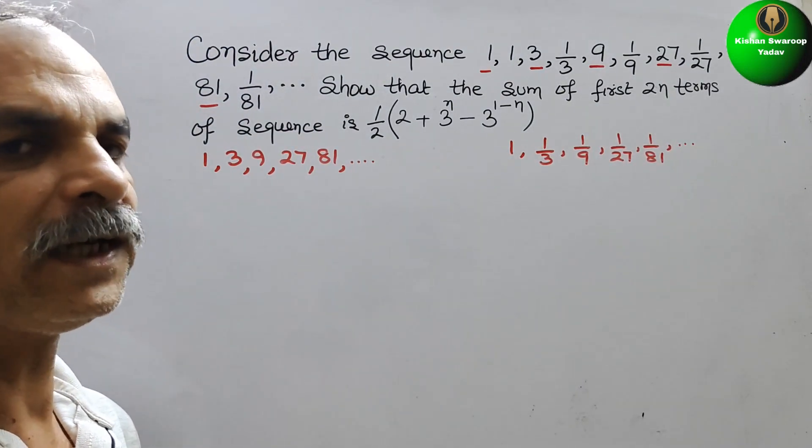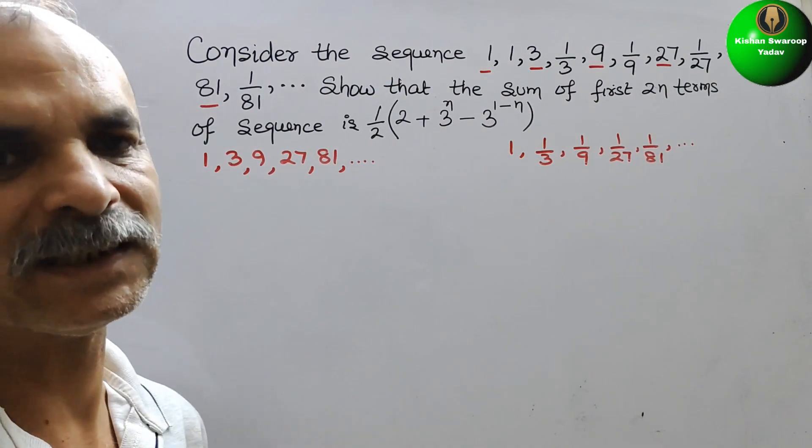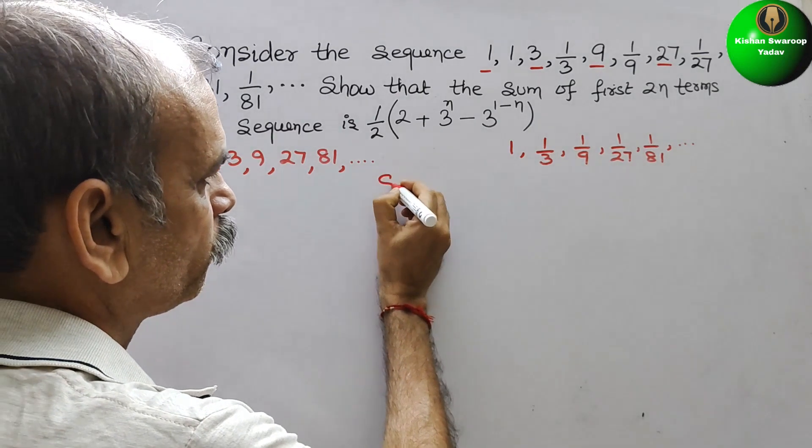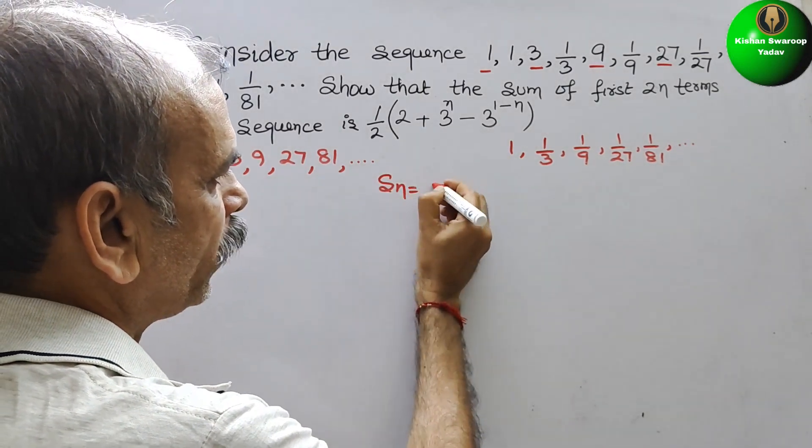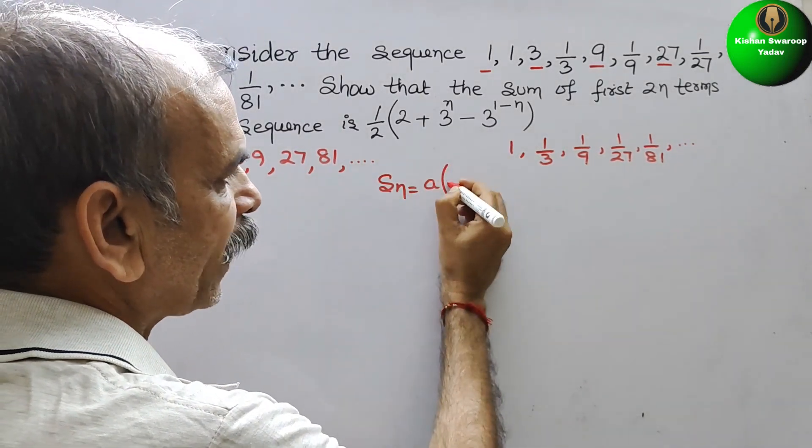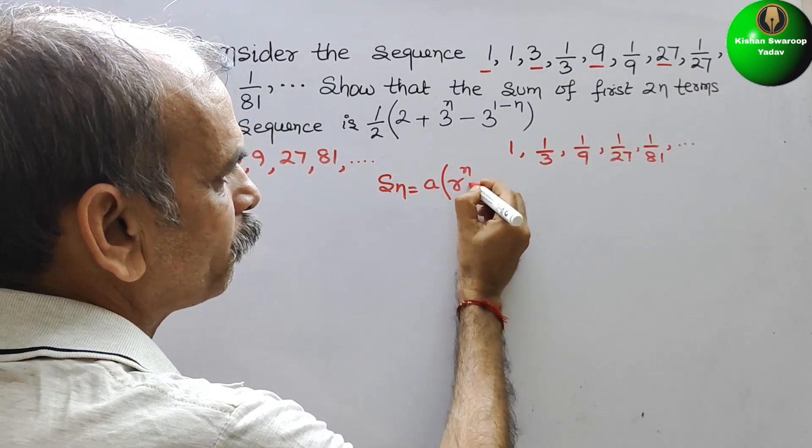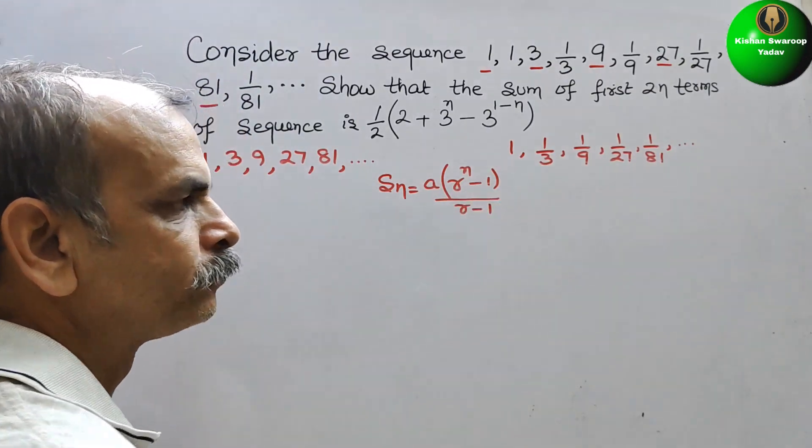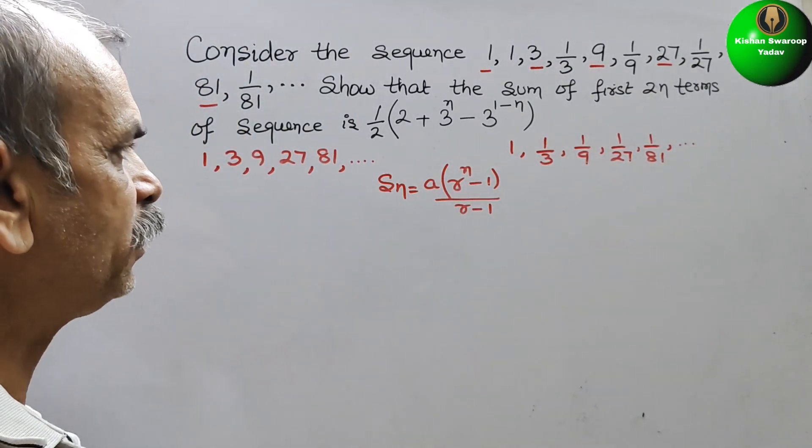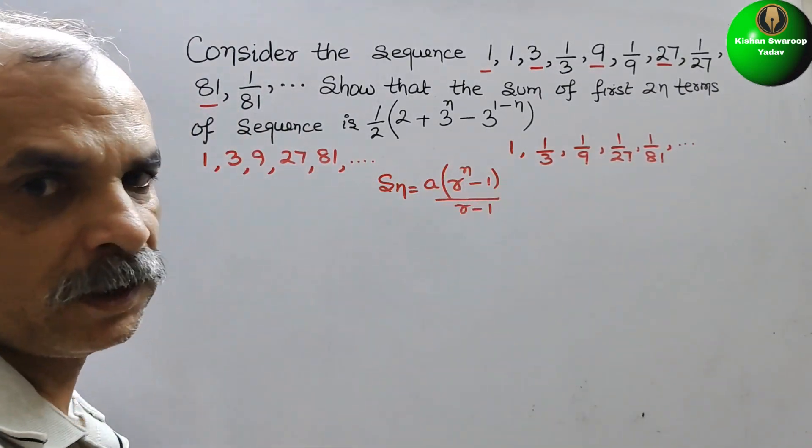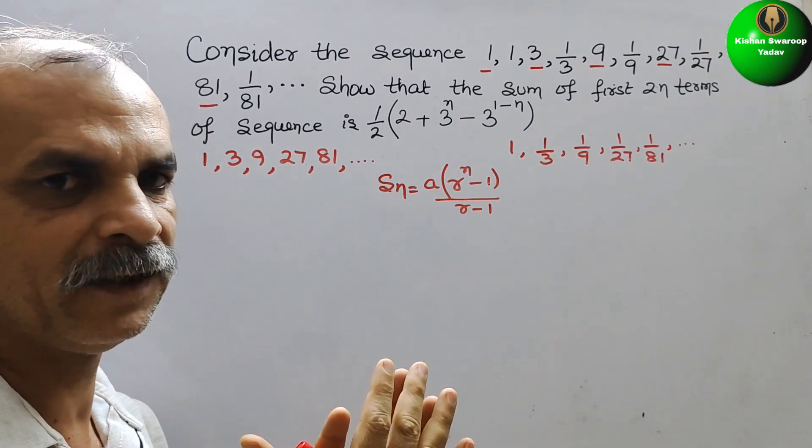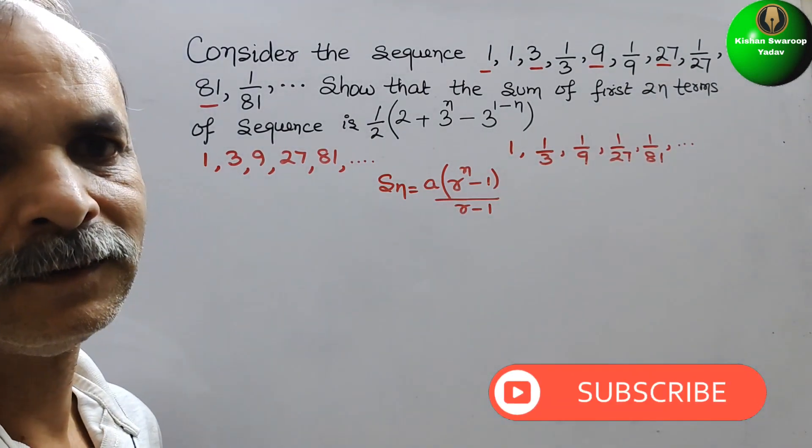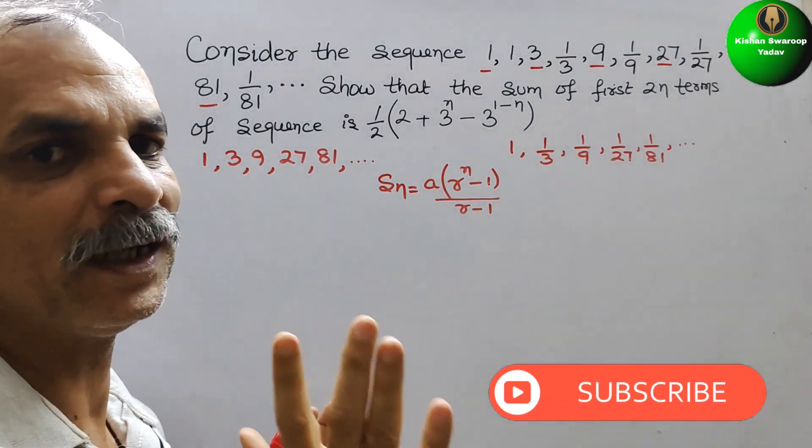First we will write the sum of the sequences. What is the formula? S_n is equal to a(r^n - 1)/(r - 1). So first we will solve this, then we will solve this, and we will add that. It will give you S_2n.